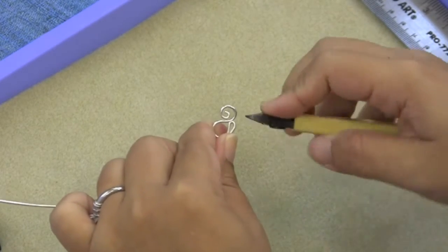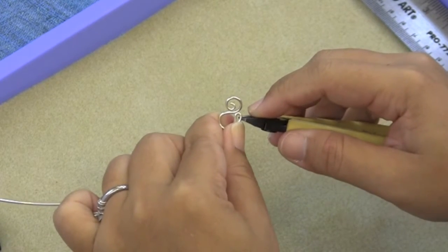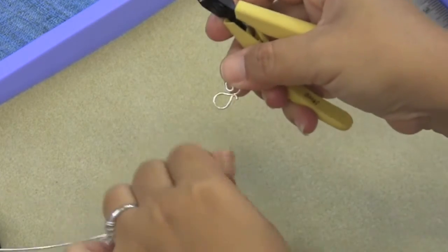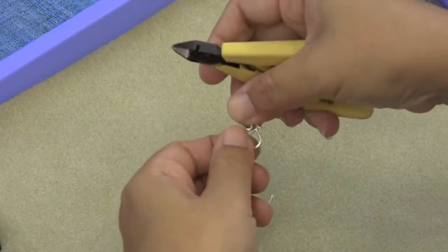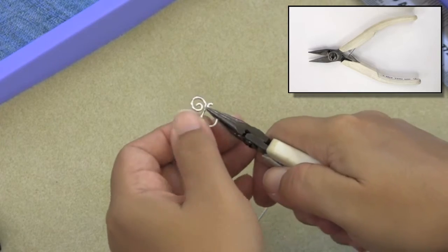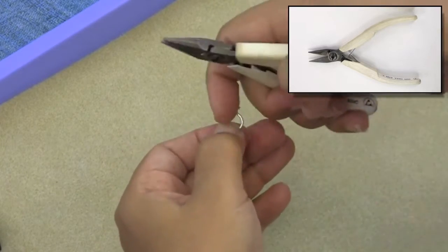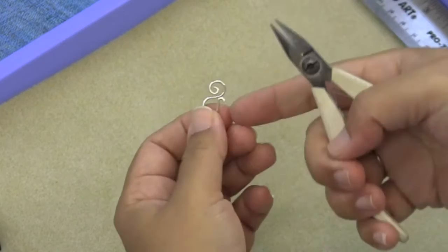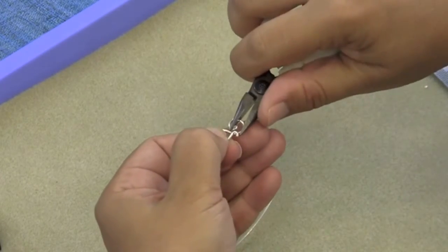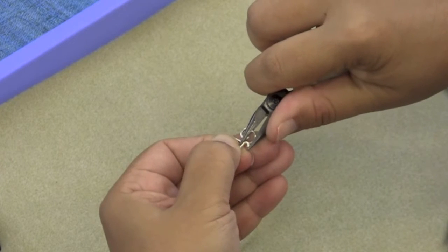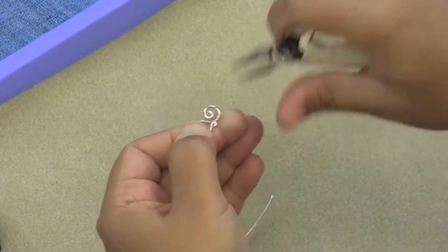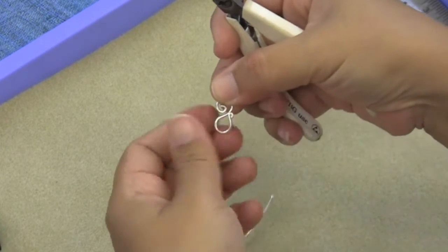I'm going to get my flush cutter, put the back of the cutter against my piece like this and trim. I'm going to pick up my chain nose plier and because the spiral part's in the way I lift up the wire like this and I'm going to use my chain nose plier to squeeze a tiny loop at the end of my hook.